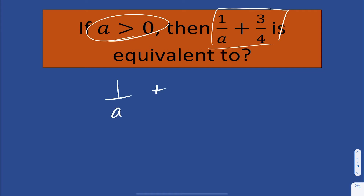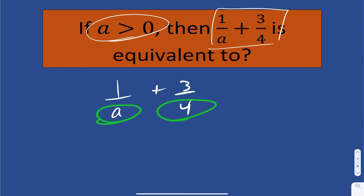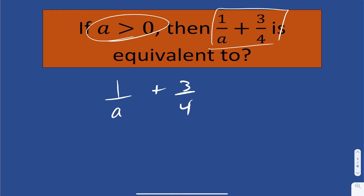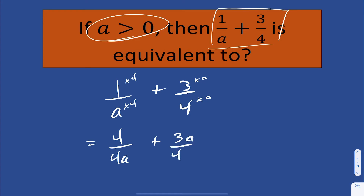What I can do here — if you take a look, we do not have a common denominator. The denominator here is a and the denominator here is 4. A common denominator would be if I multiply the top and bottom by 4 of this expression and the top and bottom by a of this one. So I'm going to multiply top and bottom by 4, top and bottom by a, in which case we get 4 over 4a plus 3a over 4a.